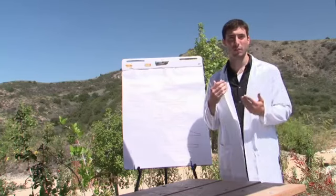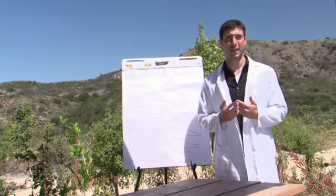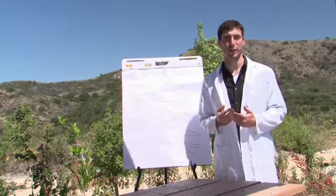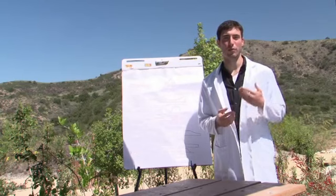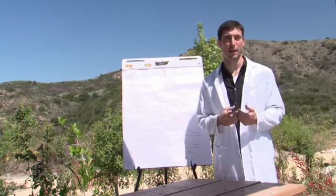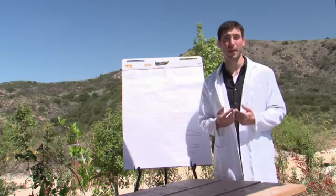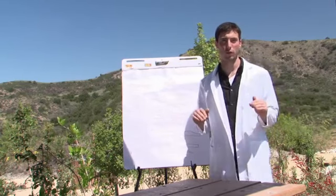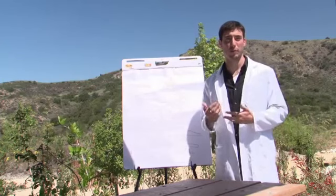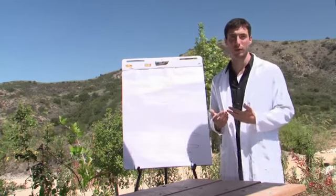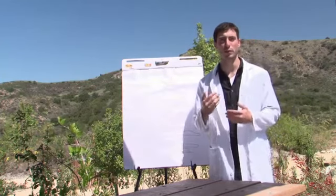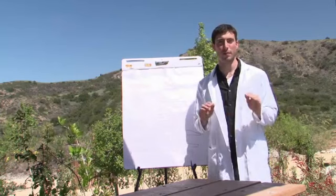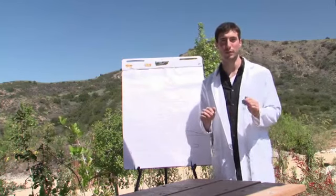Landforms are defined as natural features of the Earth's surface that are created from rock and soil and water, and they can take a number of different forms. There are a lot of landforms people are really familiar with, like mountains and hills, and some others that we're not so familiar with. I'm just going to talk about a few of the major ones today.